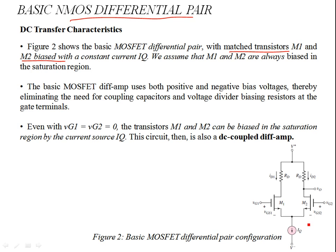These two NMOS devices are biased by an independent current source. In practice, this can be a current mirror circuit, where the current source is also a MOSFET device operating in saturation. Therefore, no voltage divider is needed at the gate terminals of M1 and M2. Even without any signal at VG1 and VG2, M1 and M2 are both operating in the saturation region due to the constant current source providing the saturation currents ID1 and ID2.